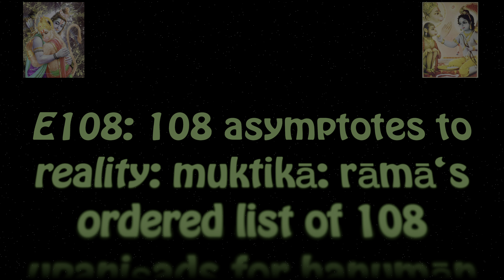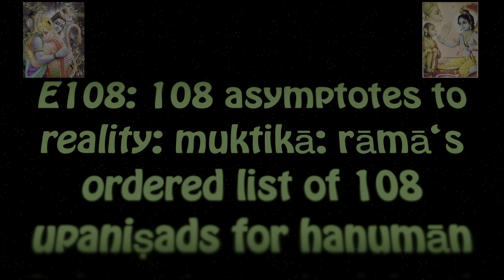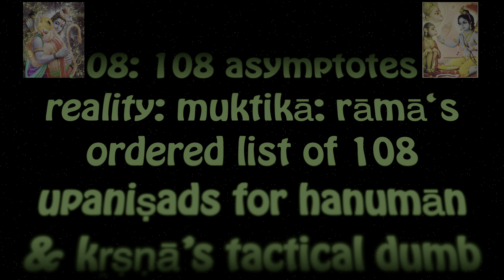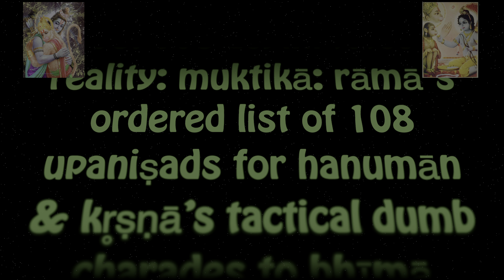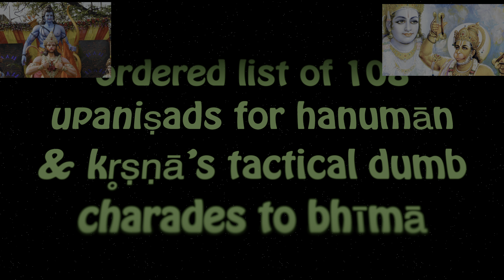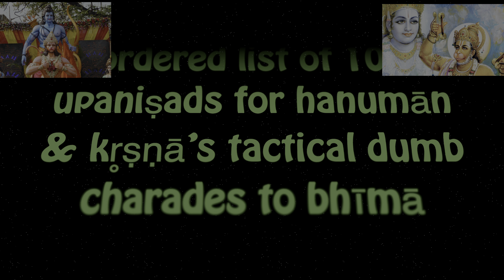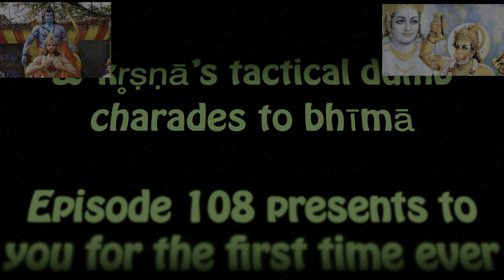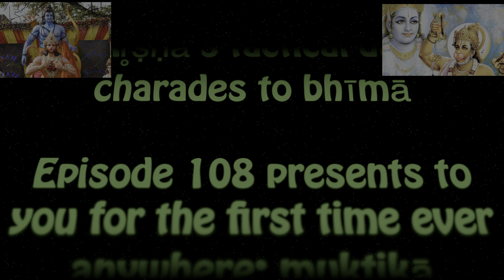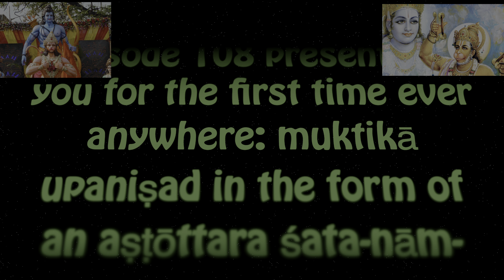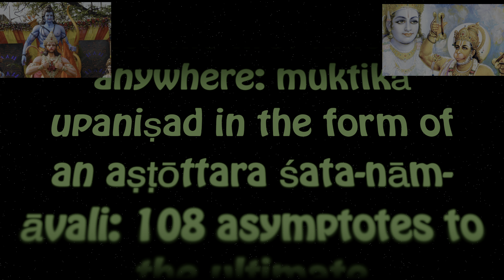Reason number 7: 108 actionable sadhanas — 7 major chakras into 16 shodha upachara pujas. Reason number 8: 7 sapta rishis into 16 samskaras minus the 4 grace enabled.